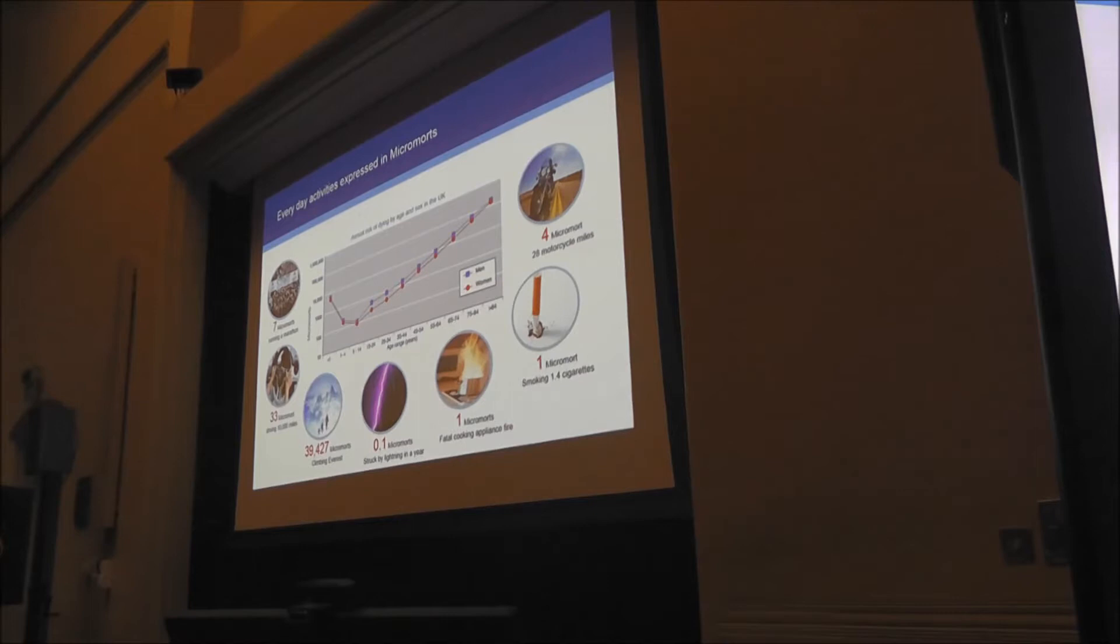We all know that risk is the likelihood and the consequence. There's a chap called David Spiegelhalter at Cambridge who talks about this thing called the micromort. A micromort is a one in a million chance of dying. It's a unit now. You can start to compare things that are not the same but using the same scale of micromort. One in a million—what does that look like? It looks like flipping 21 one-pound coins and they all end up heads. The probability of that happening is one in a million. You begin to feel what it's like now.